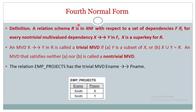The formal definition of fourth normal form: a relation schema R is in fourth normal form with respect to a set of dependencies F, if for every non-trivial multi-value dependency X multi-determines Y in F+, X should be the super key of R. A multi-value dependency X multi-determines Y is trivial if Y is a subset of X, or X union Y equals R.